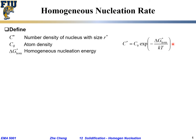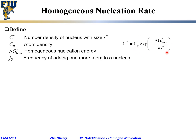Of course, the higher the nucleation energy, the lower the probability. This relationship connects the critical nucleus number density to the atomic density and the probability of finding a new critical nucleus.